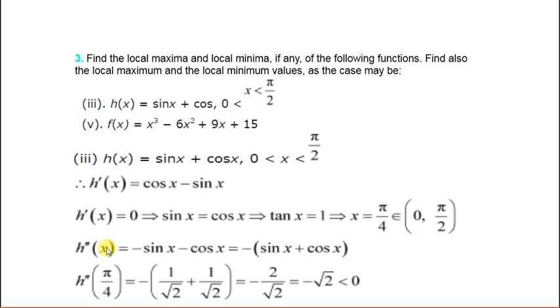Now find h''(x). h''(x) will be -sin x - cos x. Take minus common: -(sin x + cos x). Now find the value of h''(x) at this critical point. Put x = π/4. At π/4, sin and cos are both 1/√2. Then you get -2/√2 = -√2. Negative means less than 0.